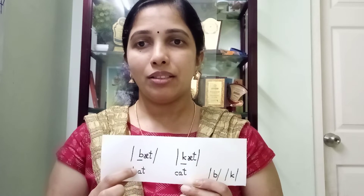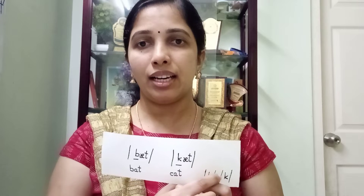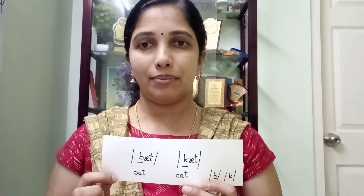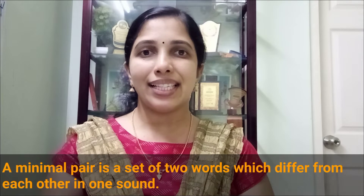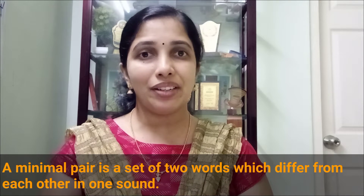So we can say /b/ and /k/ are two phonemes. Minimal pair is used to identify the phonemes in a particular language. A minimal pair is a set of two words which differ from each other in one sound.